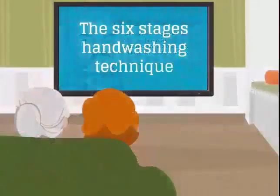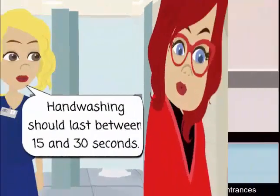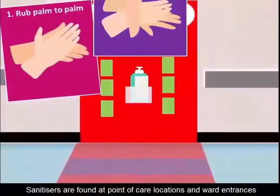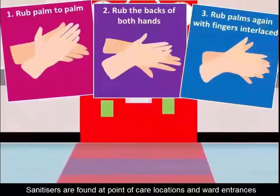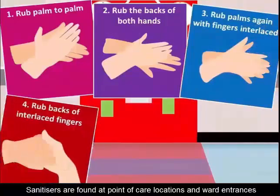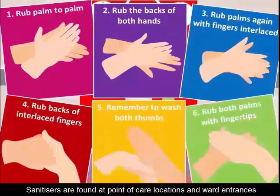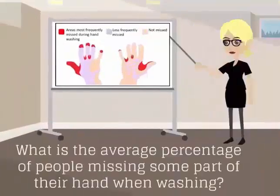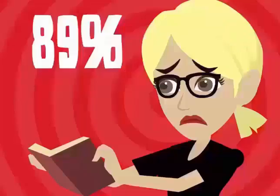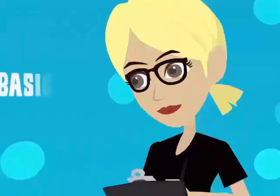Today we use a six-stage hand washing technique. Hand washing should take between 15 and 30 seconds. First, rub palm to palm; then rub the backs of both hands; rub palms again with interlaced fingers; rub the backs of your interlaced fingers; wash your thumbs; and finish by rubbing both palms with your fingertips. A shocking 89% of people miss some part of their hands when washing, so keep that in mind.